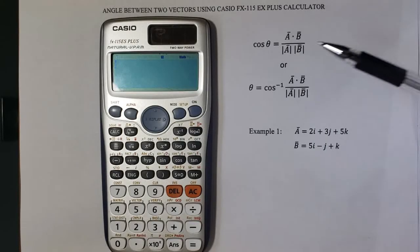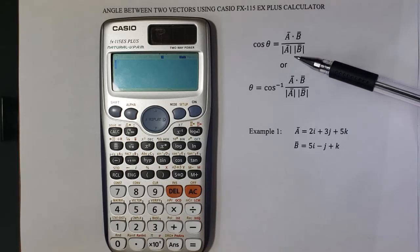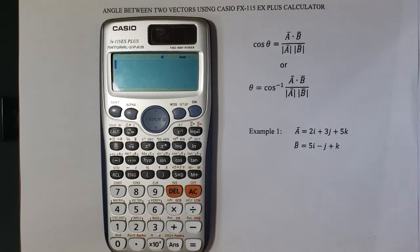We will take the dot product between the two vectors in the numerator and we will take the product of the magnitudes of both vectors.